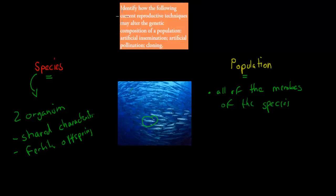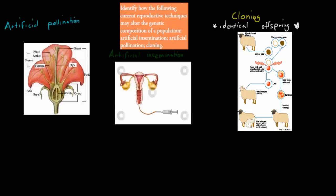The dot point says: identify how the following current reproductive techniques may alter the genetic composition of a population. These are artificial insemination, artificial pollination, and cloning. So we have to say how each one changes the genetic composition. First, I'll talk about artificial pollination.